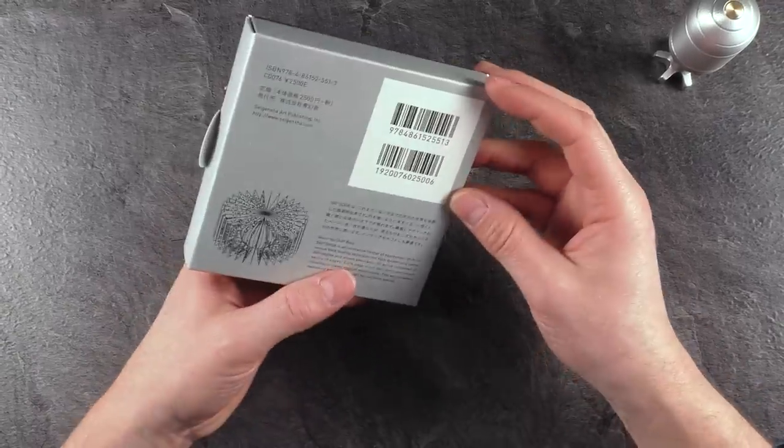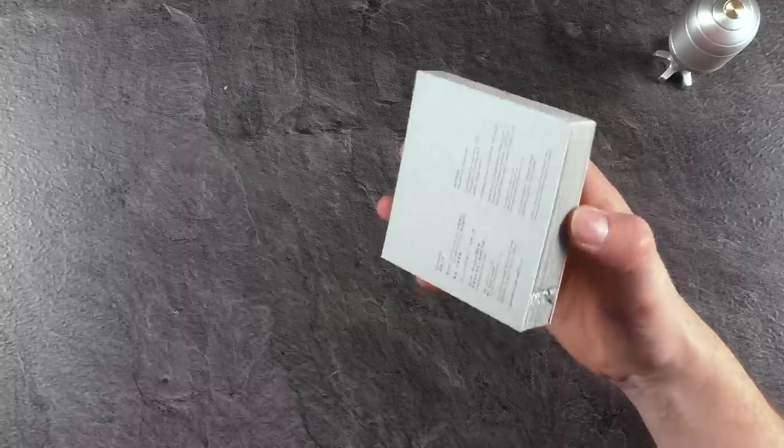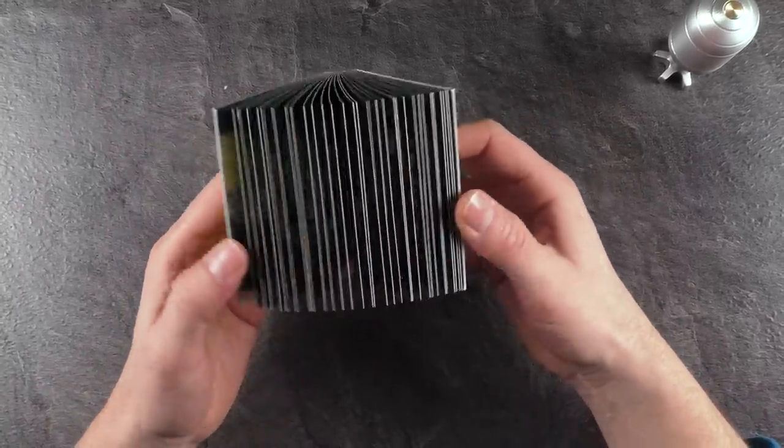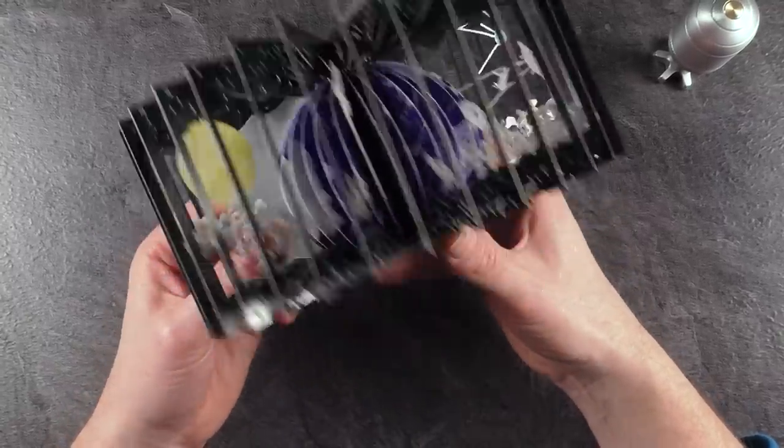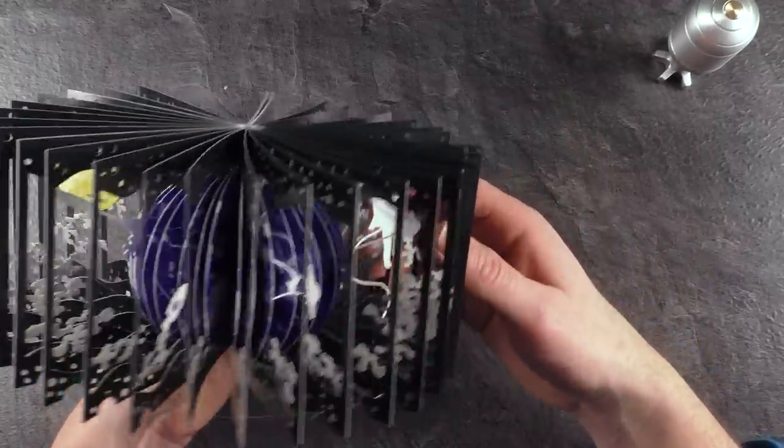It's called 360 book and it's actually not a book. It's a thing that looks like a book and it can be unfolded and reveals a three-dimensional, in this case, space where you can see some things flying around here.